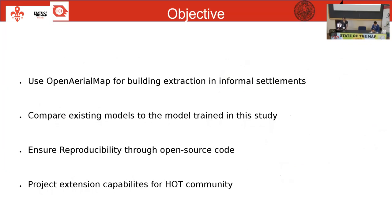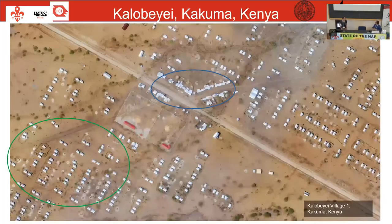This project has four objectives. First, to use the OpenAerialMap, a partner organization of OSM, for building detection in informal settlements. Second, to compare existing models to models trained in this study. Third, to ensure reproducibility through open source code. And lastly, to design an experimental framework that is easily extendable by the HOT community.